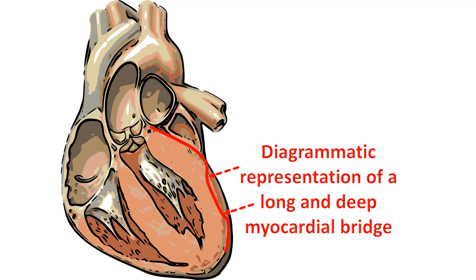Longer and thicker myocardial bridges may be associated with the usual type of partial blocks in the blood vessels of the heart. These blocks are noted in locations preceding the region of the myocardial bridge.